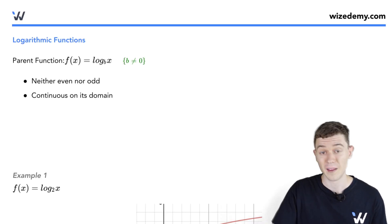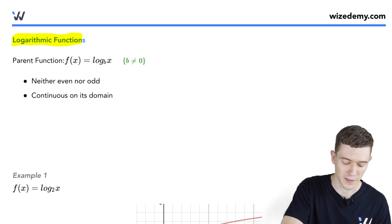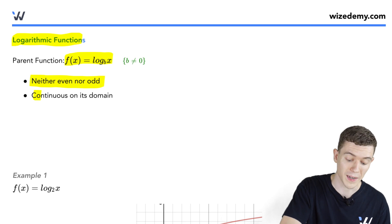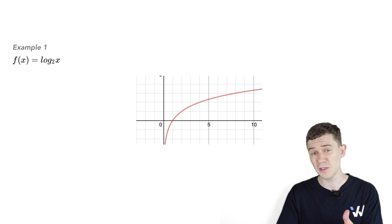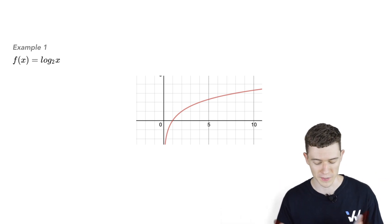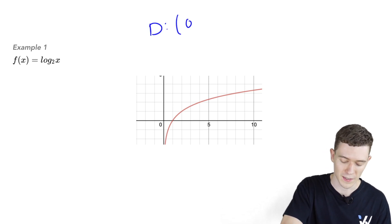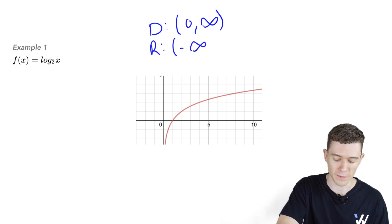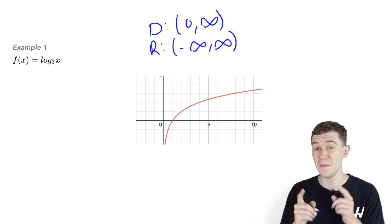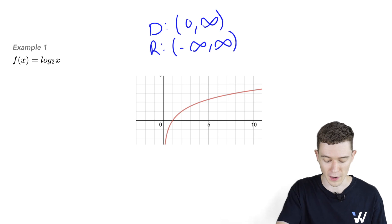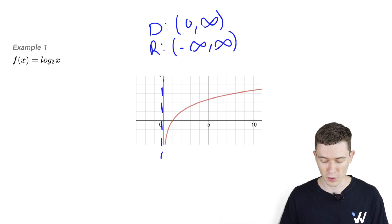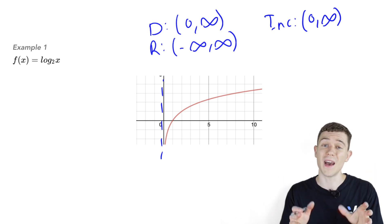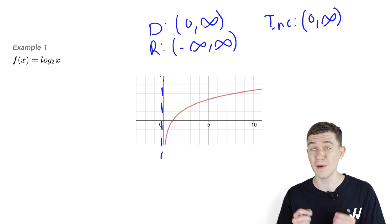The last parent function is the logarithmic function f of x equals log base b of x, where b does not equal zero. It has no symmetry, but it is continuous on its domain. It's the inverse of the exponential function — reflecting it over the line y equals x gives this graph. The domain is zero to infinity, with a vertical asymptote at x equals zero. The range is minus infinity to infinity. This function is always increasing on its domain, zero to infinity.